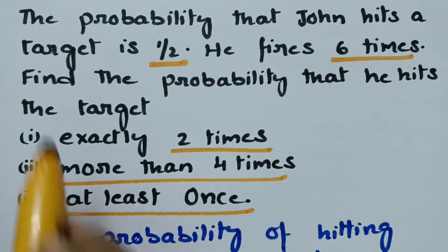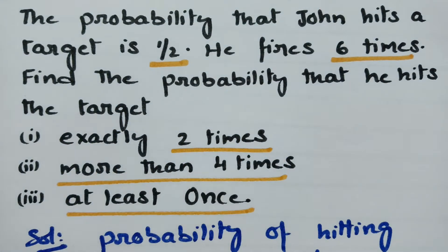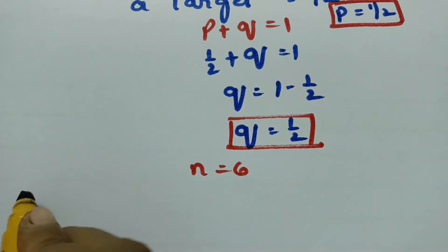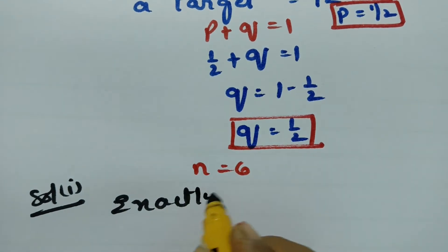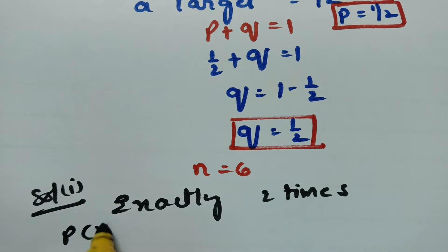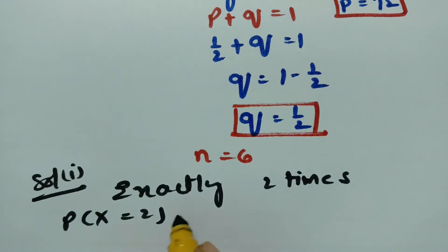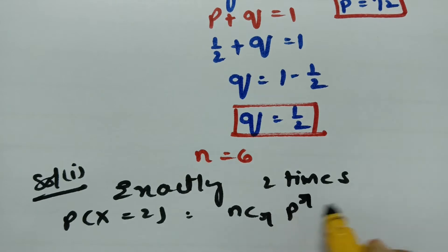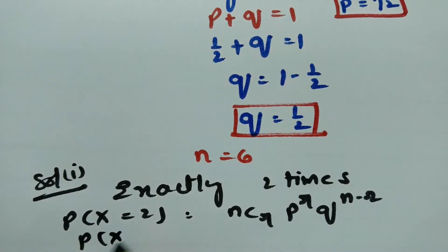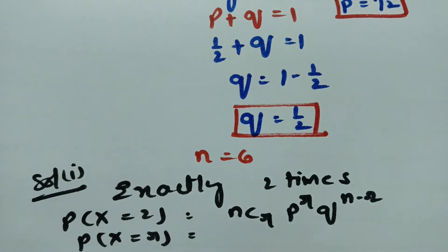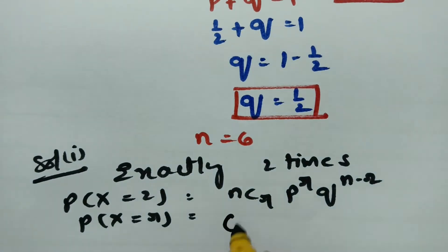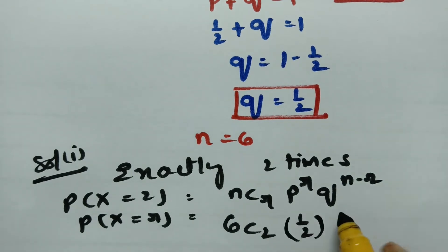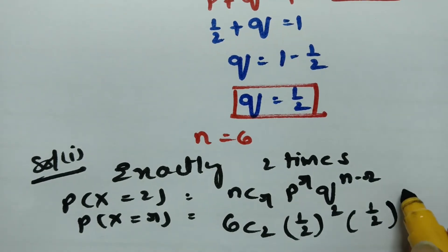Now we have to find the probability that he hits the target exactly 2 times — Solution 1. That is the probability of X equals 2. We use the formula: nCr times P to the power r times Q to the power n minus r. Here n equals 6, P equals half, Q equals half, and r equals 2.